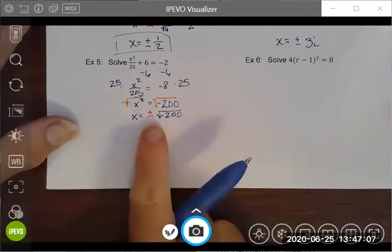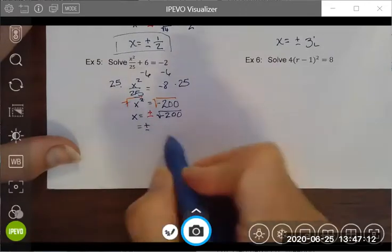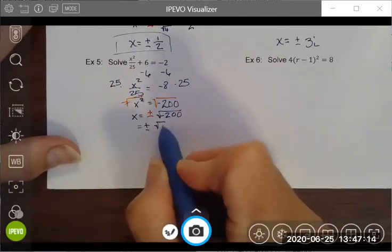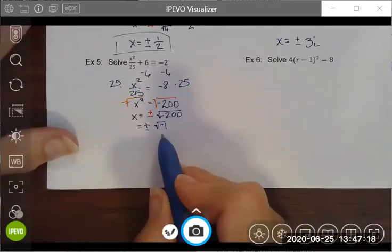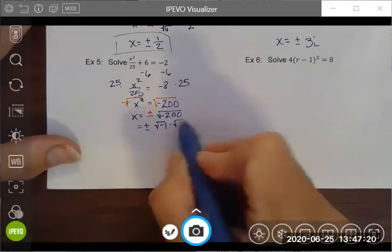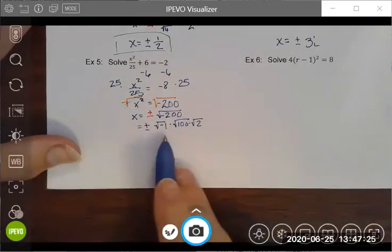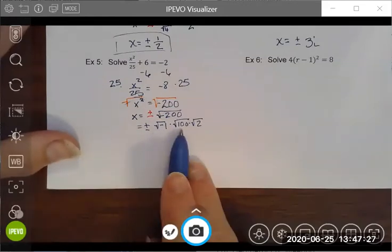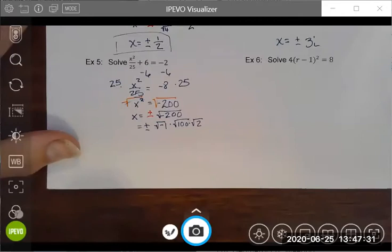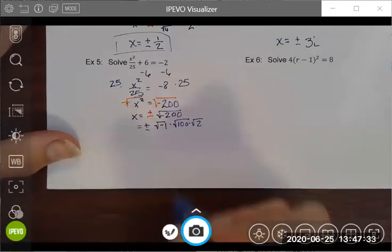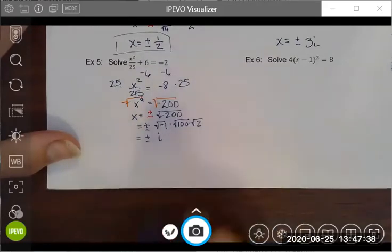Now I need to simplify under my radical symbol. Keeping my plus or minus, I'm going to rewrite this as the square root of negative one, because I know that is the definition of an imaginary number. I'm going to rewrite this as 100 times square root two. Negative one times 100 times two is a broken down version of negative 200.